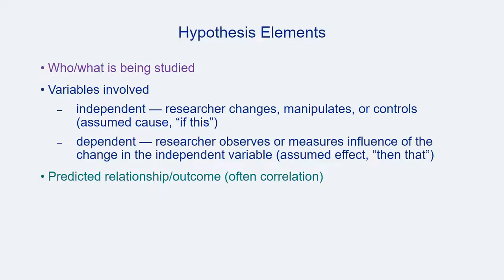The major components of a hypothesis include who or what is being studied, the variables involved, and a predicted outcome. Two major types of variables are included: independent variables — the variables that could be changed, manipulated, or controlled through research design — and dependent variables — the variables that are observed or measured to discern the influence of a change in the independent variable. One way to think about this is that the independent variable is the 'if this' statement, and the dependent variable is the 'then that' statement.